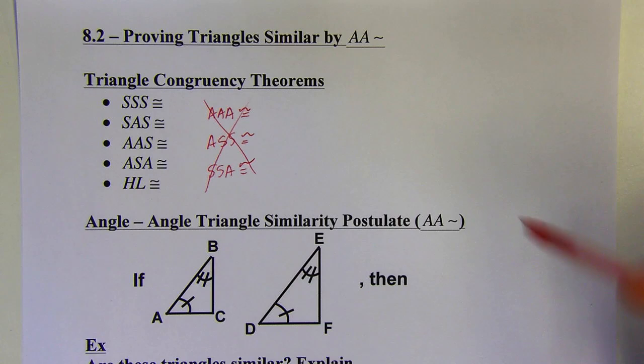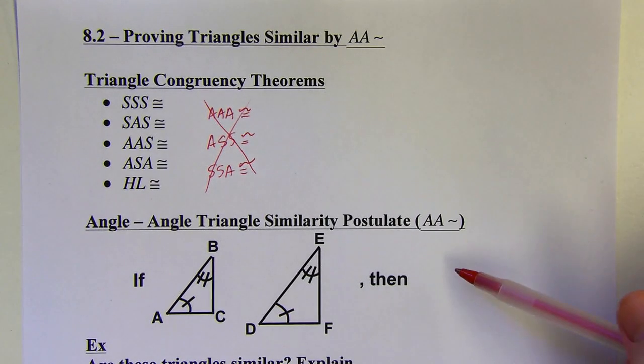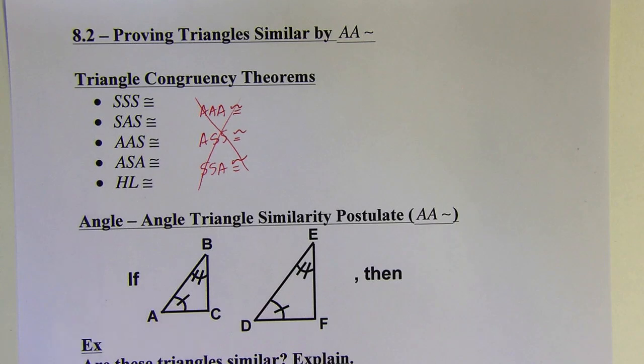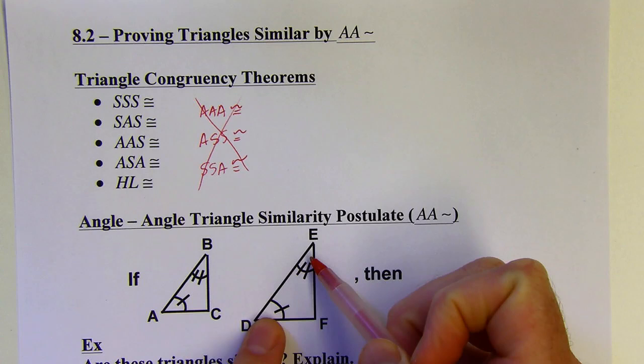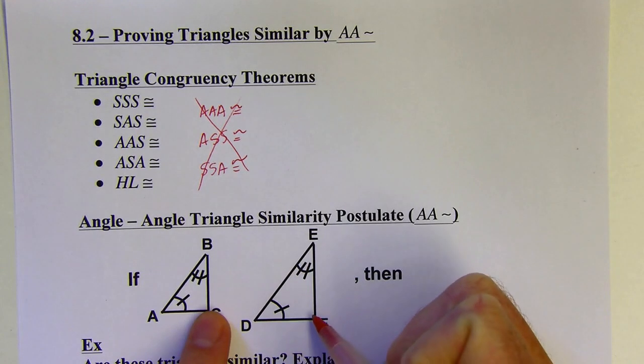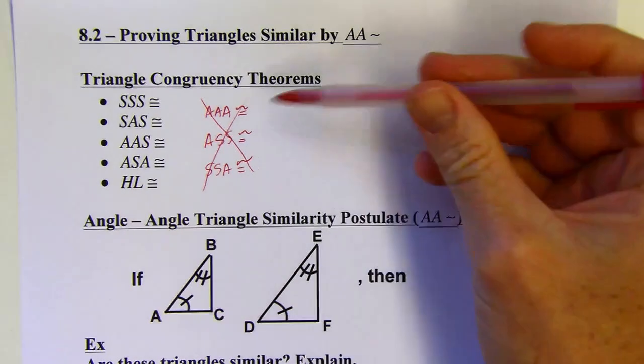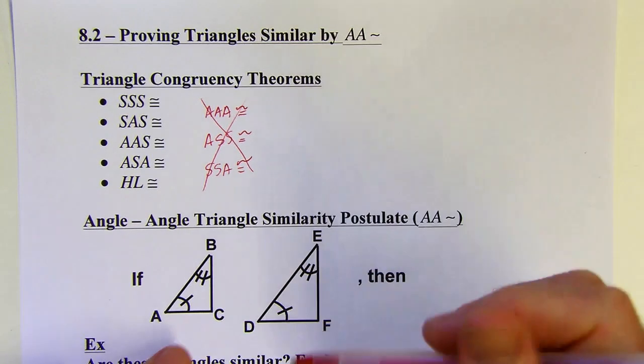The angle-angle similarity triangle similarity postulate just says that if you have two different triangles where two sets of the angles are congruent, then actually you'd have the third set by the third angles theorem. But anyways, if you just have two sets, AAA doesn't work for congruency but it does work for similarity.